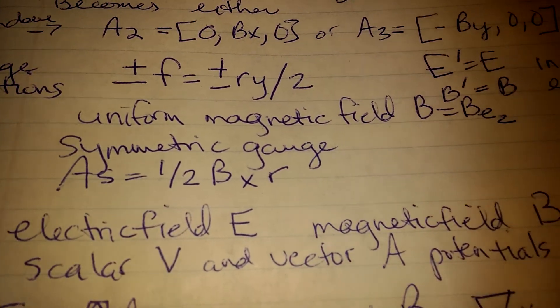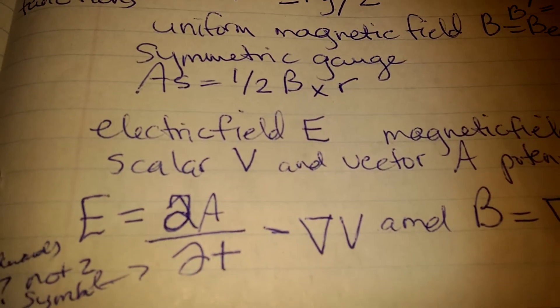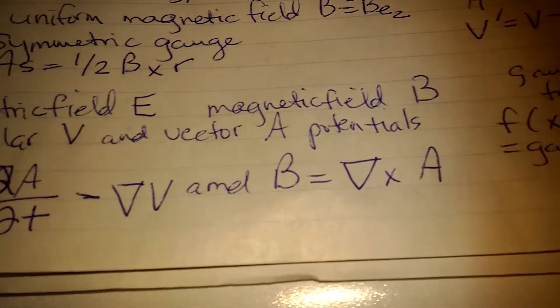Uniform magnetic field, b equals that. Symmetric gauge is that. Electric field, e. Magnetic field is b.